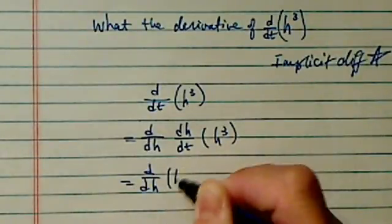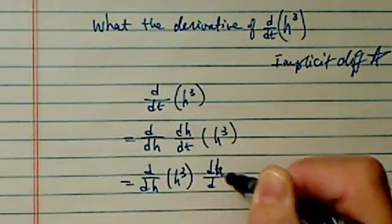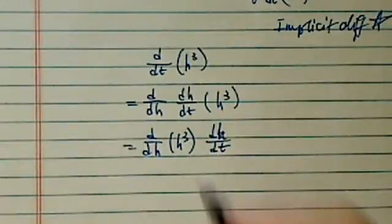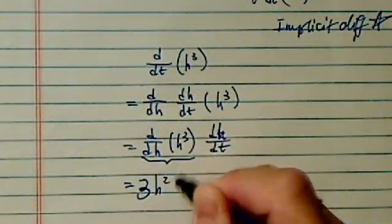Now, d/dh for this variable is very easy. This one indeed becomes 3h².